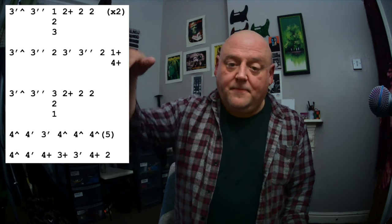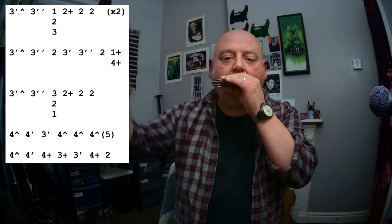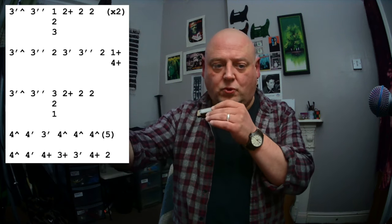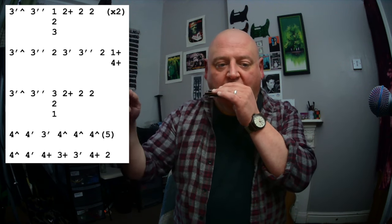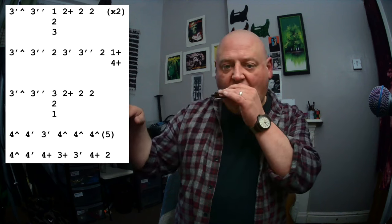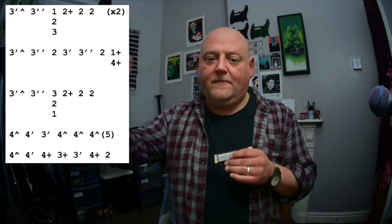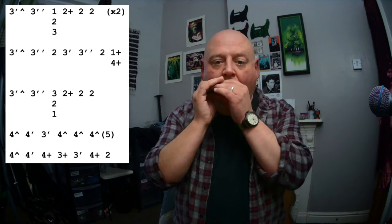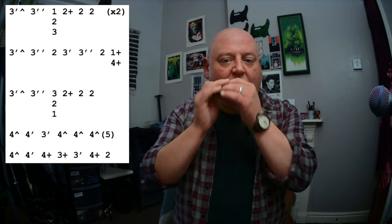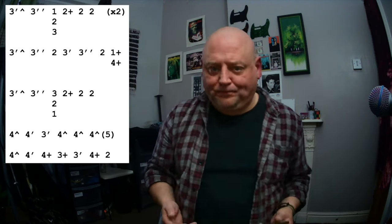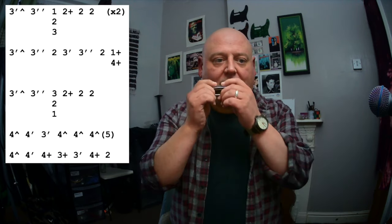Four draw dip, four draw bend, four draw, blow off to over to three blow. Three draw half step bend, four blow, two draw, finishing off on our root note back on the two draw. So I'll play that through again without the backing track.